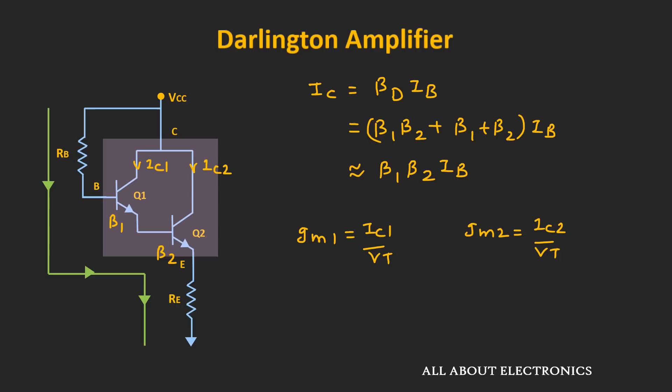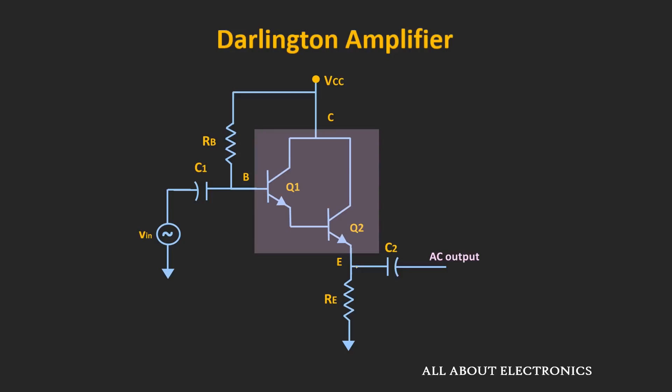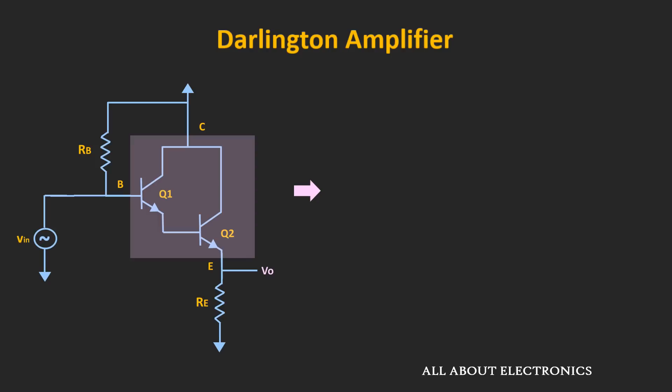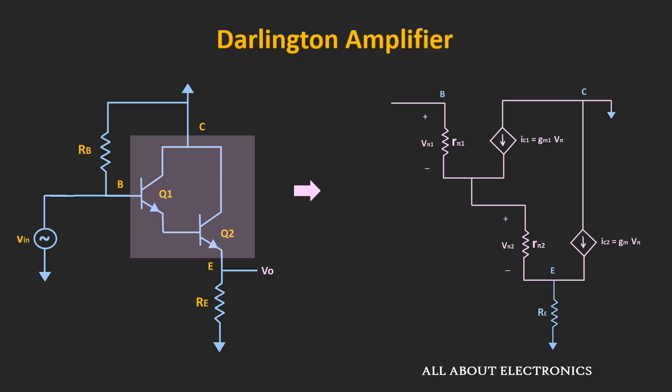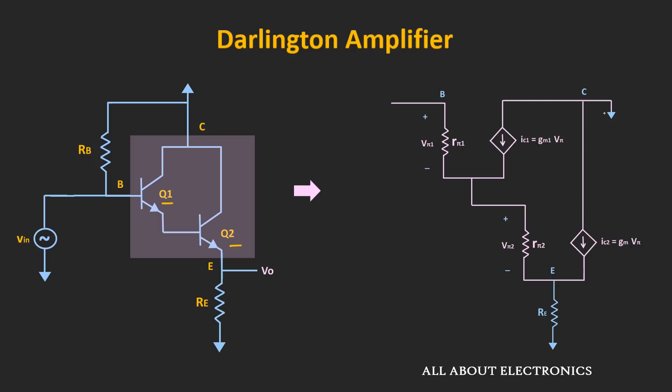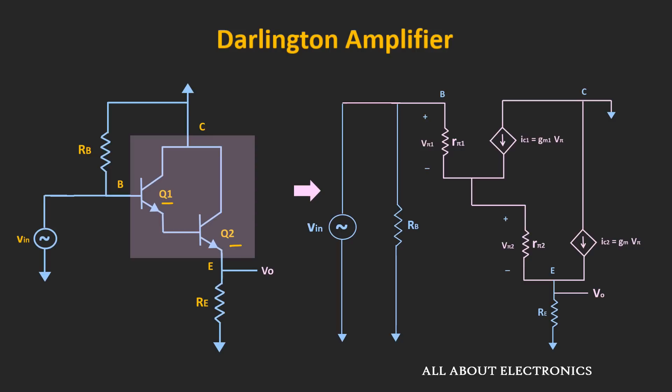Now let's do the AC analysis, or small signal analysis, of this Darlington pair. For the AC analysis, these coupling capacitors will act as a short circuit, while this DC voltage source will act as zero. We then replace this Darlington pair by its small signal model. This is the small signal model of the first transistor Q1, and this is the small signal model of the second transistor. The collector of both transistors are connected together. The input and base resistor Rb are connected between the base and the ground terminal, while the output is taken across the emitter terminal.